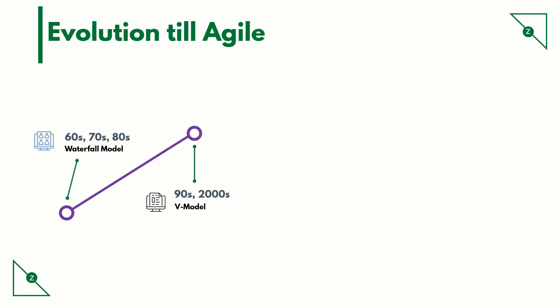During the 90s and 2000s, a more mature form of the waterfall model was more popular: the V model. The V model is an extension of the waterfall model and is based on the association of a testing phase to each corresponding development stage.